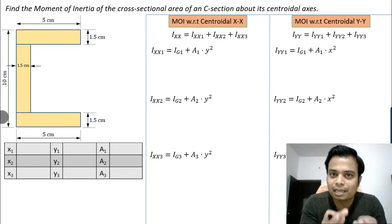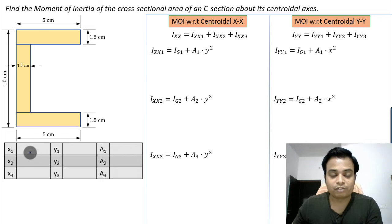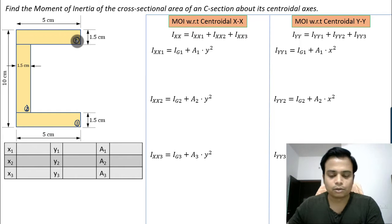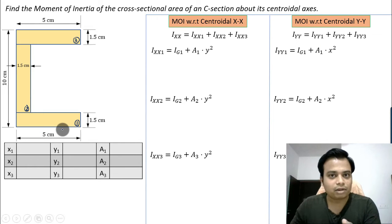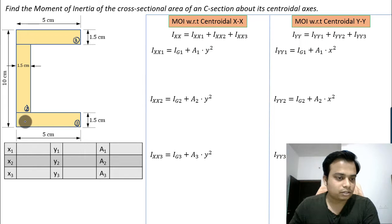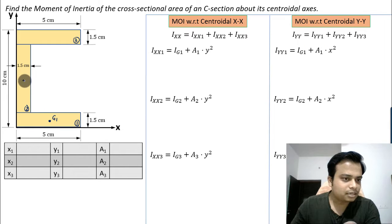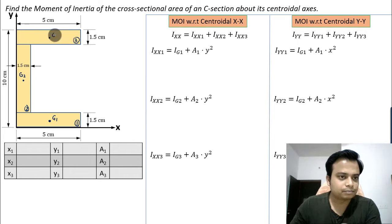Let's begin with step one. We need to fill up this table. The entire C-section has been divided into three parts — let's call them one, two, and three. The centroid for rectangle one is g1, centroid for rectangle two is g2, and centroid for rectangle three is g3.